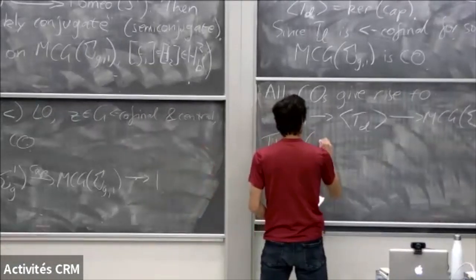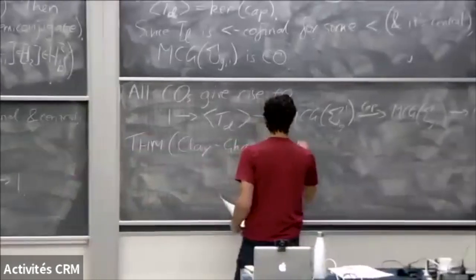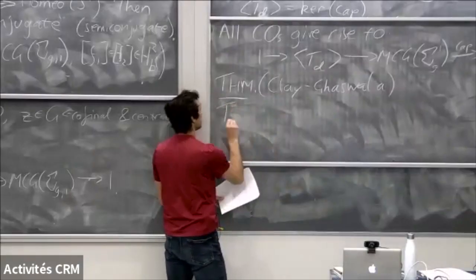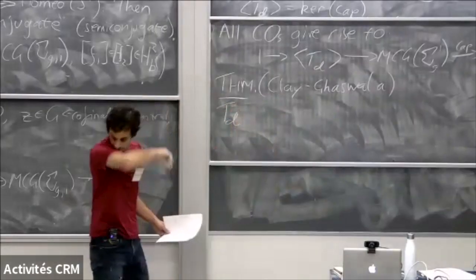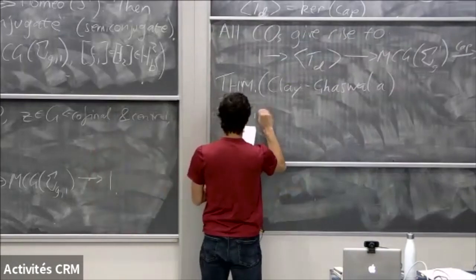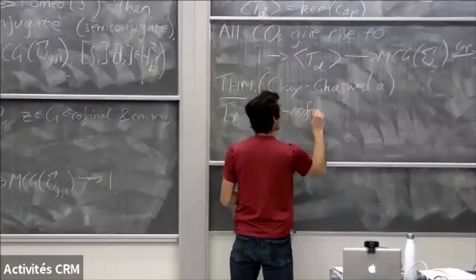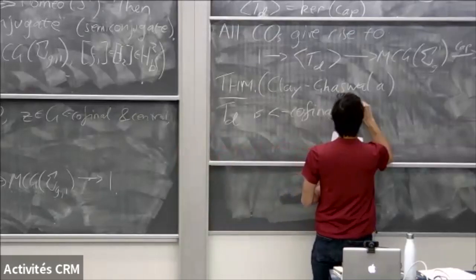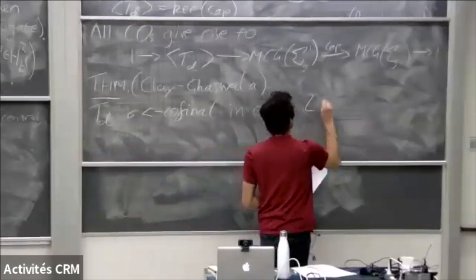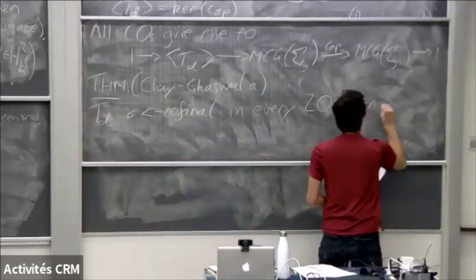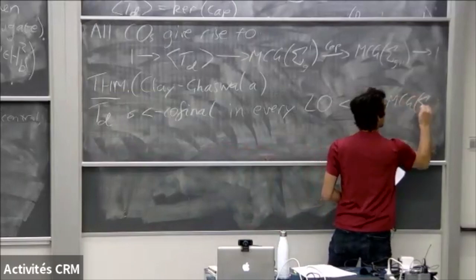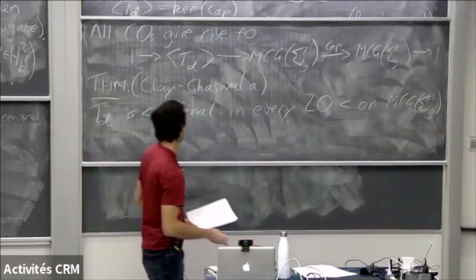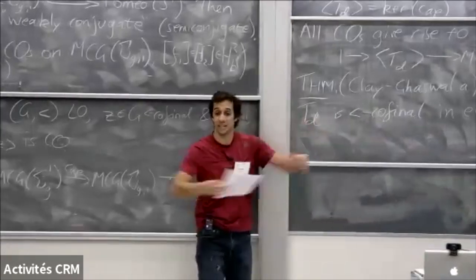Here's the main theorem — the embarrassingly elementary theorem. The Dehn twist around the boundary component is co-final in every left ordering on the mapping class group of sigma with one boundary component. And it's either positive or negative, but either way it's going to be co-final.